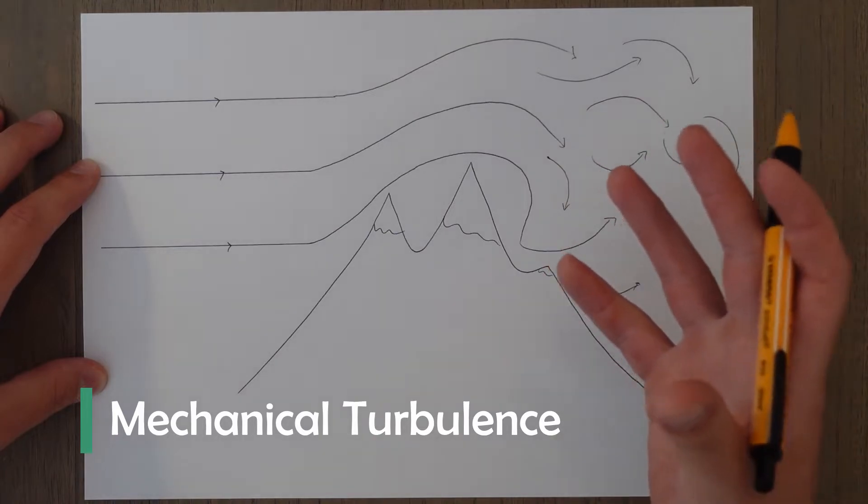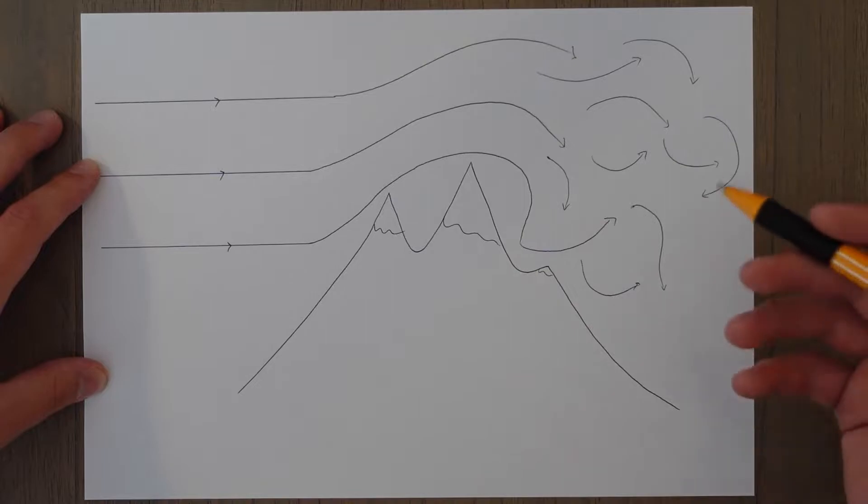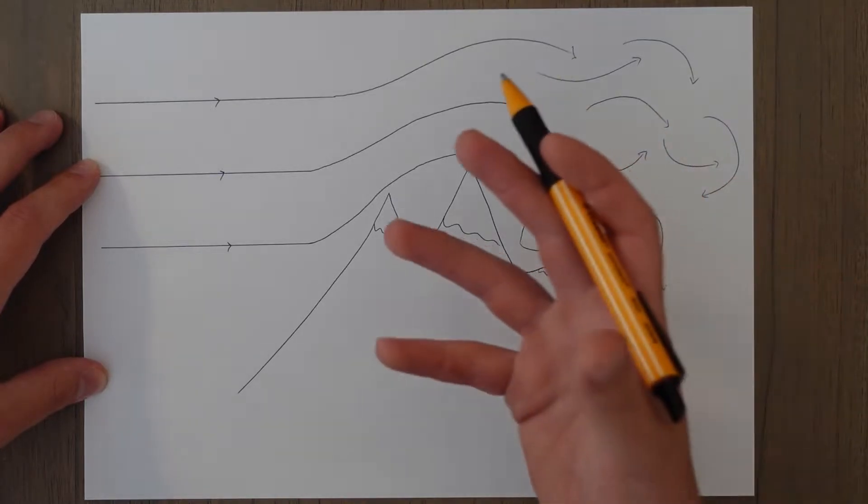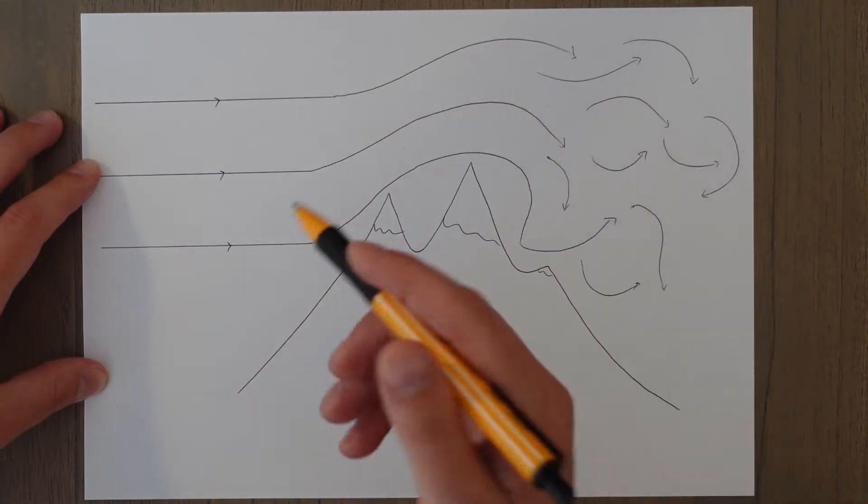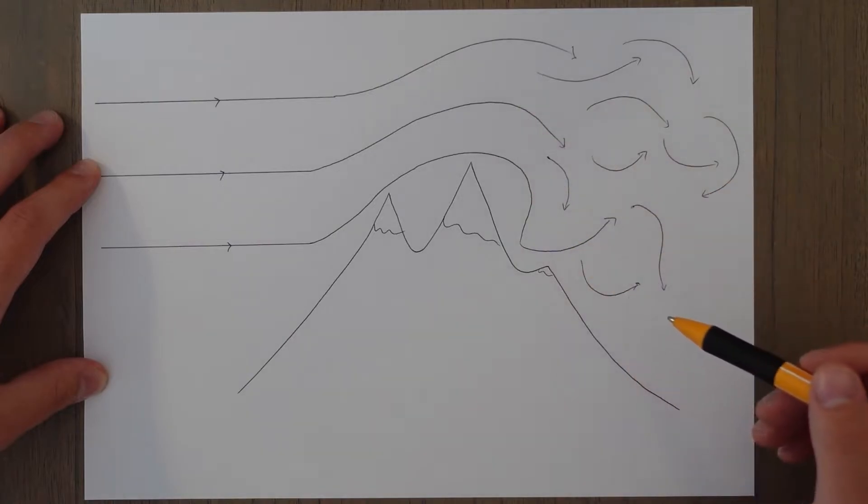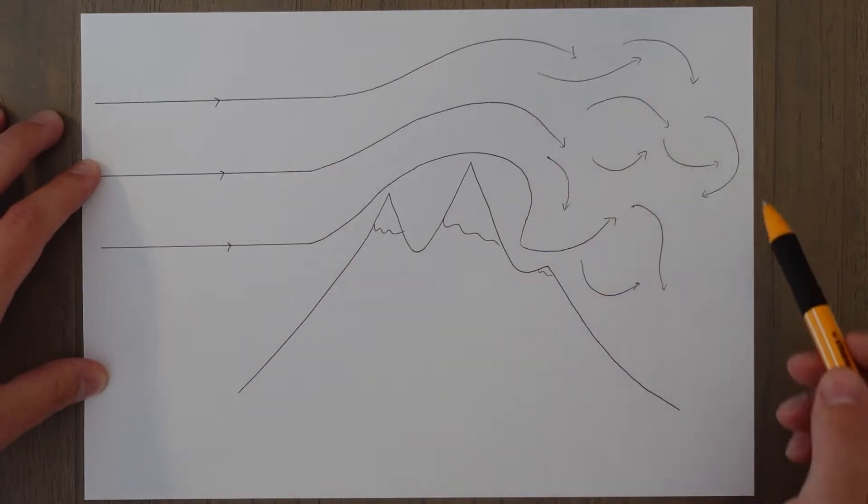Turbulence is formed by a few different environmental factors that cause the air to flow in a disrupted, turbulent way. The first we are going to look at is called mechanical turbulence, which is formed by obstructions on the surface. So any object that protrudes from a smooth surface will disturb the laminar flow of the air and create turbulent flow.